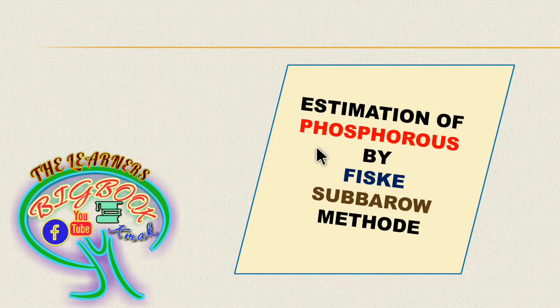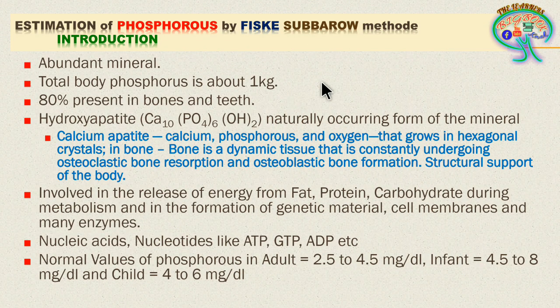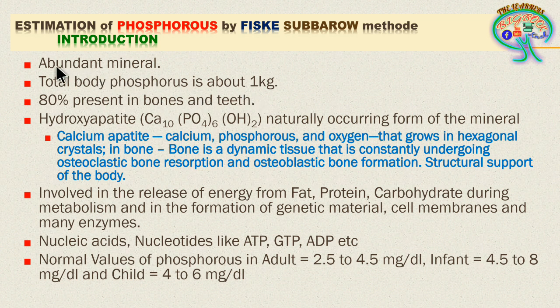Hello guys, today we are going to discuss the practical estimation of phosphorus by the Fiske-Subbarow method. In this we are going to estimate the phosphorus present in the biological sample. Before that, we are going to discuss how phosphorus is related to the human body. The total phosphorus present is around 1 kg in the total body mass approximately.